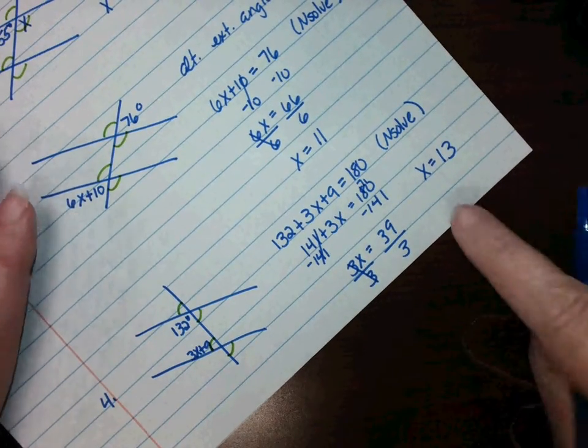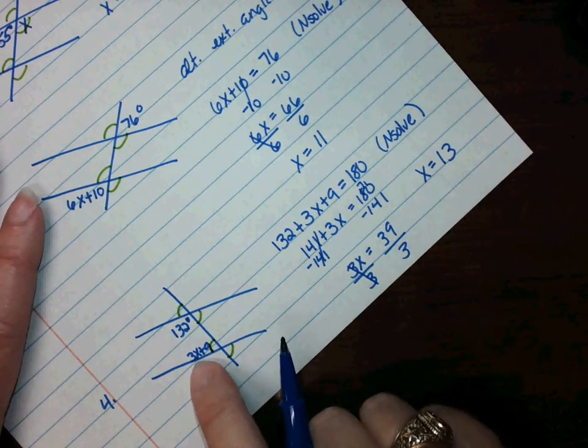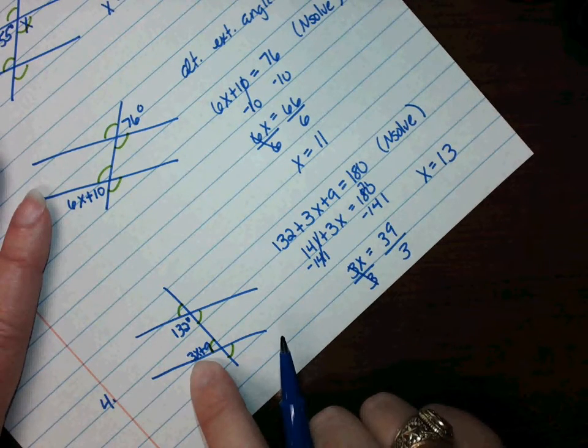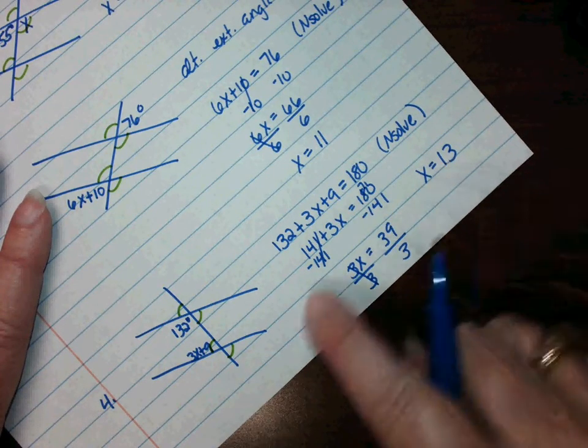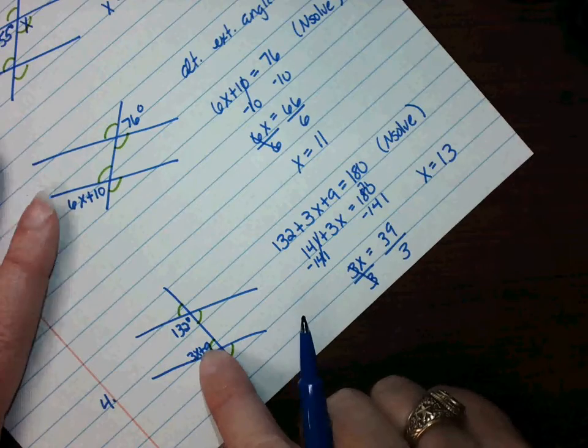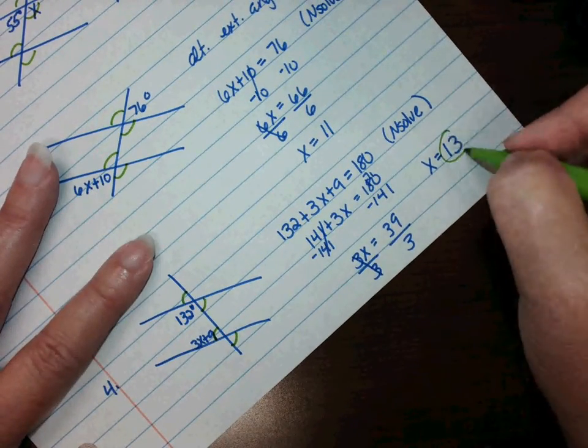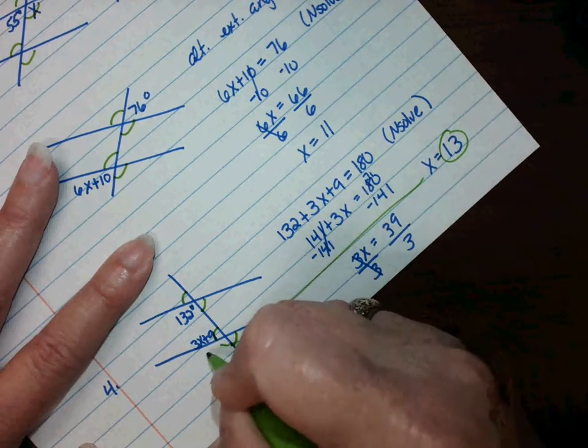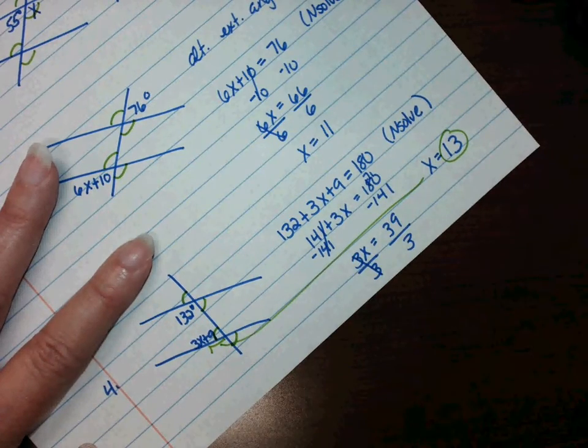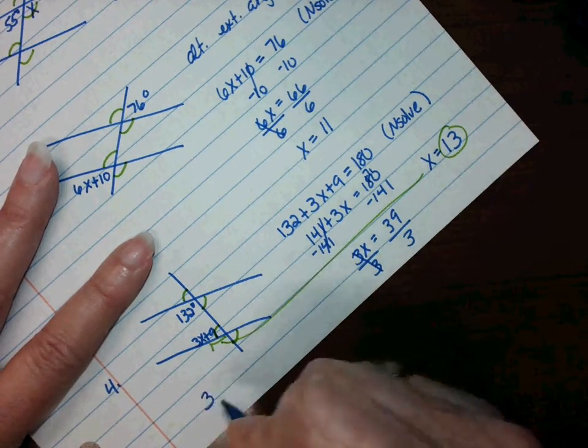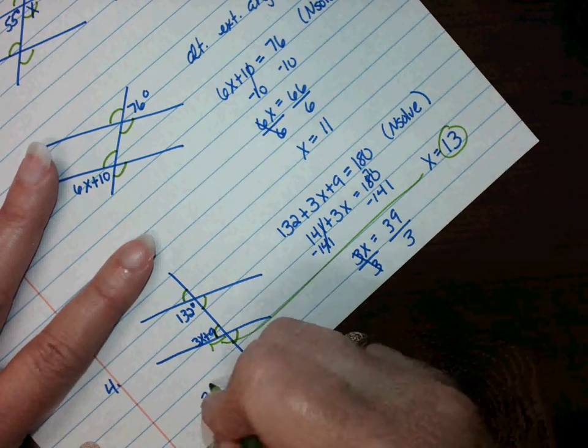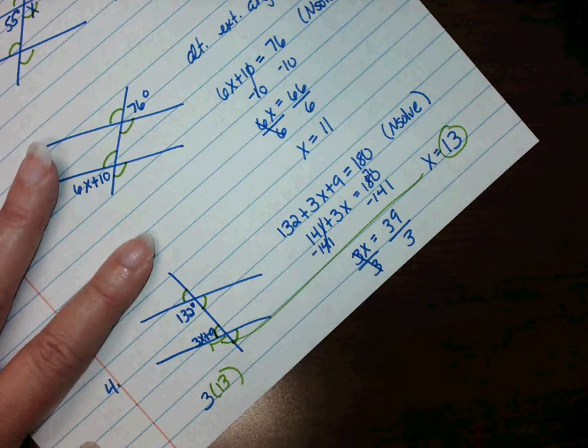Now the question says what is the measure of angle 3x plus 9. And this particular question, they didn't ask me for the value of x, they asked me for the measure of this angle. So that means I need to take the 13 and plug it in right there.